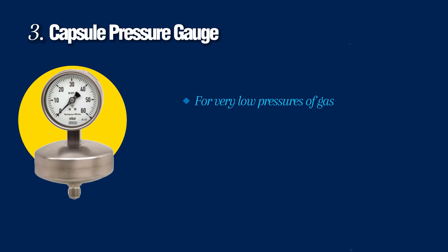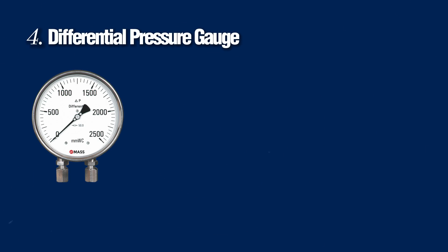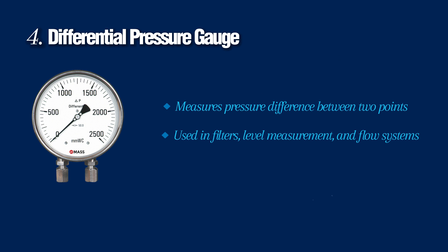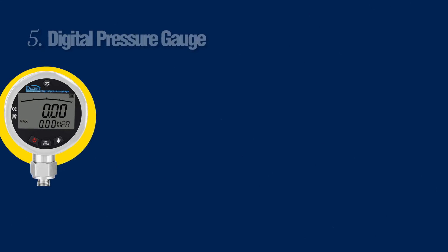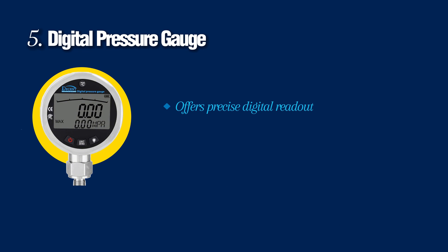The third one is the capsule pressure gauge, used for very low pressure of gas and in clean room or HVAC applications. The fourth one is the differential pressure gauge — it measures the pressure difference between two points and is used in filters, level measurement, and flow systems. The fifth one is the digital pressure gauge, which offers a precise digital readout and comes with memory, alarms, or wireless options.